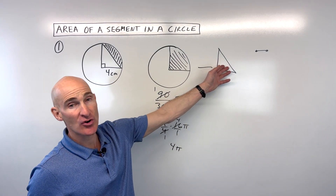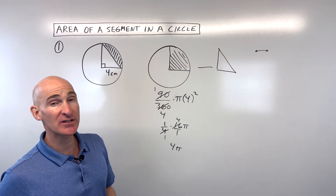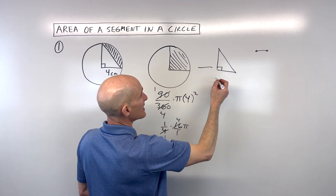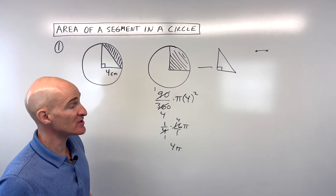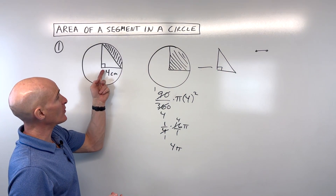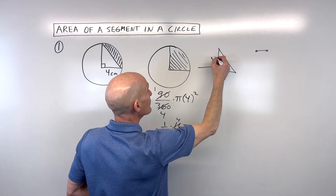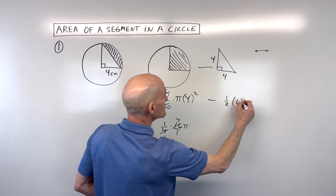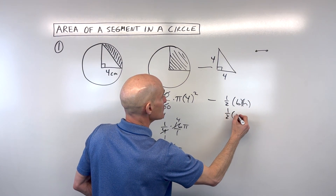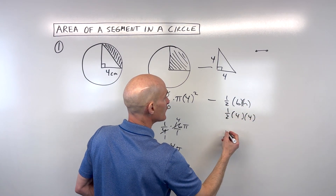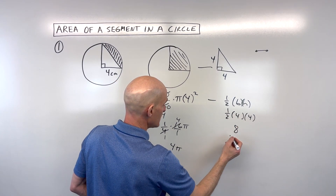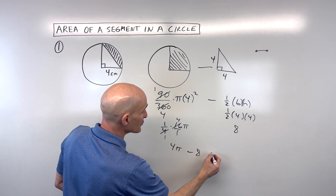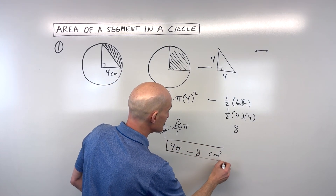Now we're going to subtract off this triangle. There are different ways to find the area of a triangle; we'll use one half base times height because this is just a right triangle. We've already got the base, which is four, and the height, which is four. So one half times four times four gives us 16 times a half, which is 8. So the final answer is 4 pi minus 8 centimeters squared.